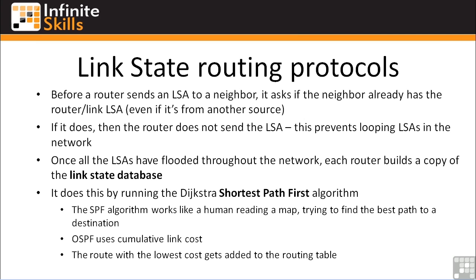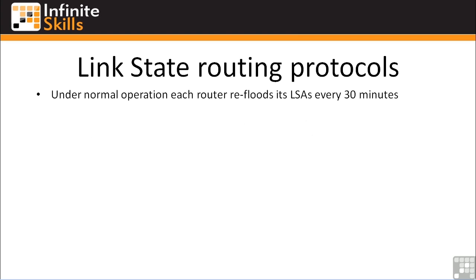So now we have a functioning stable network with all the routes learned by all the routers in the routing domain. Under normal operation, each router refloods all of its LSAs every 30 minutes — that's in case something happened and a router couldn't broadcast an LSA, perhaps because the router went down or some other reason. It refloods everything every 30 minutes just in case there were any undetected route changes or link state changes. You can go on the router and force the issue if you want, but you generally don't need to because OSPF is pretty good about keeping track of itself.